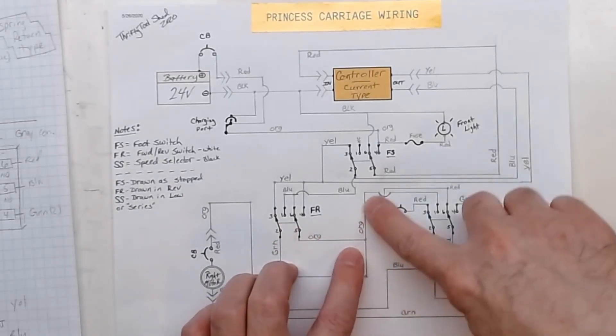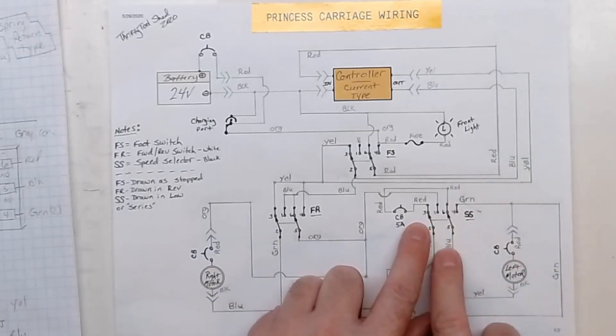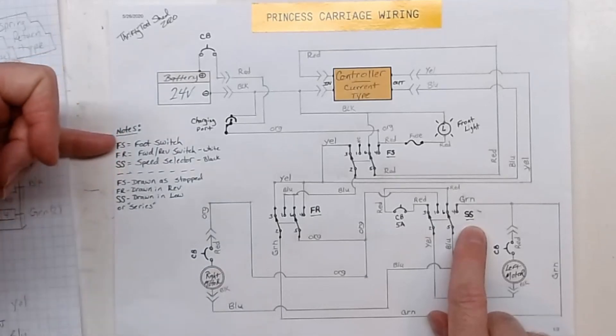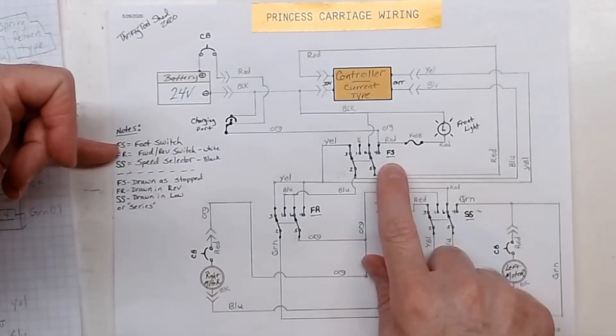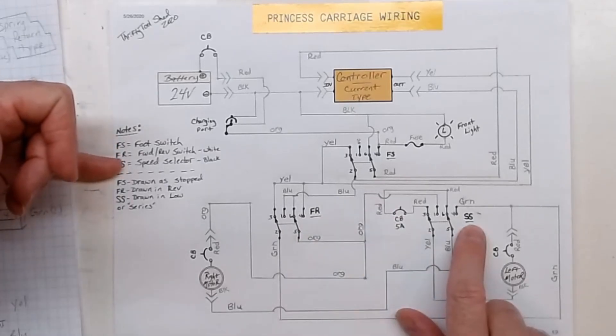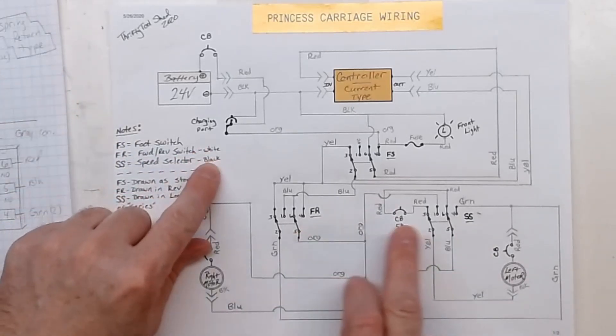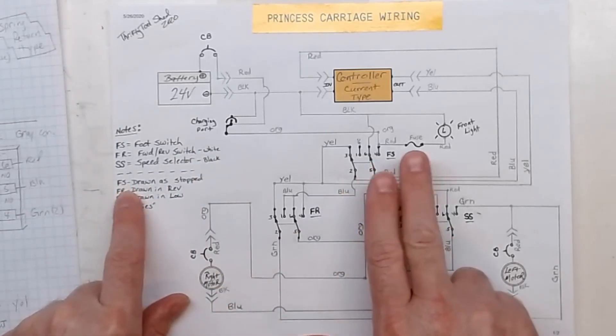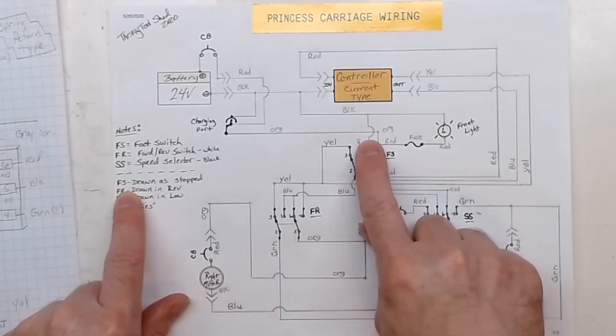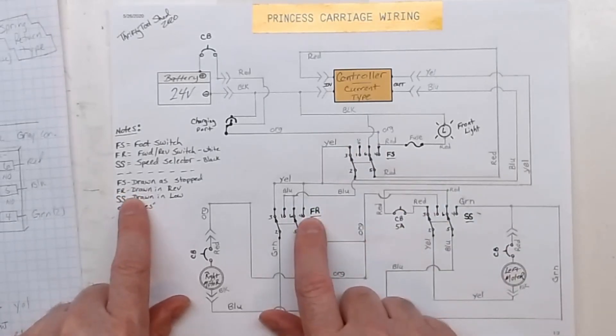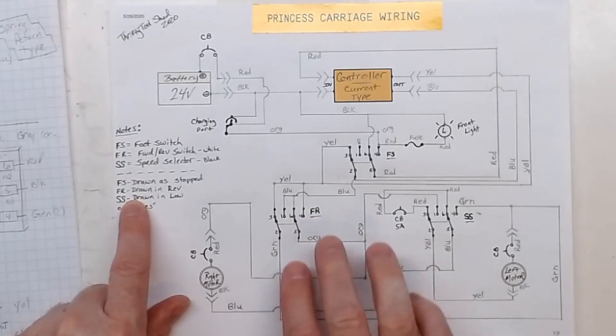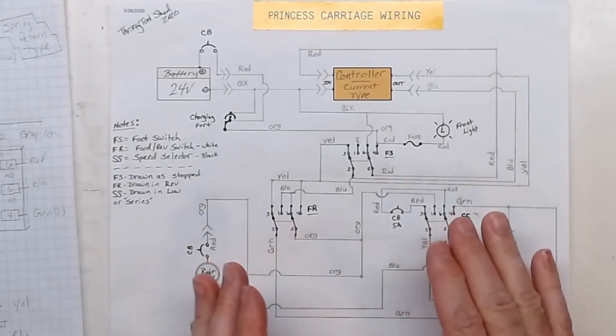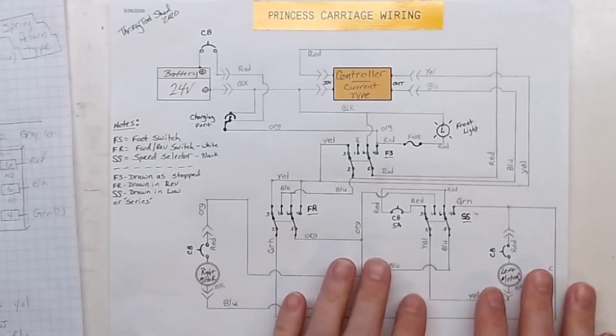We come off from our green and orange - orange goes to our speed selector switch. I've shown in my notes FS for foot switch, FR for forward/reverse switch, SS for speed selector switch. This one is designated white, this one is black. I've drawn this in the stop position with normally closed contacts, FR in reverse position, and the selector switch in low because in reverse it would be in low or series.